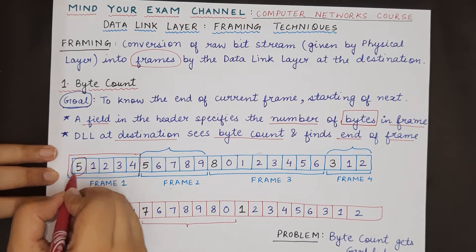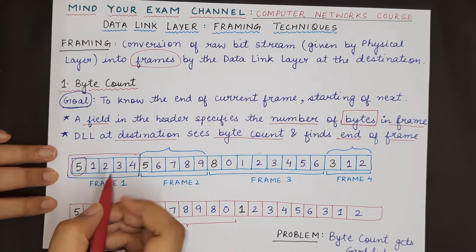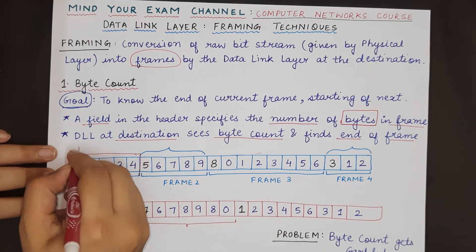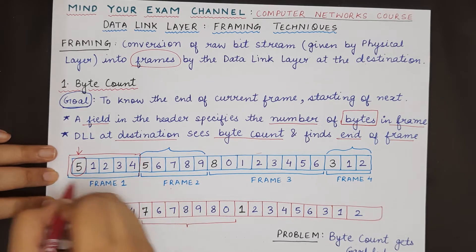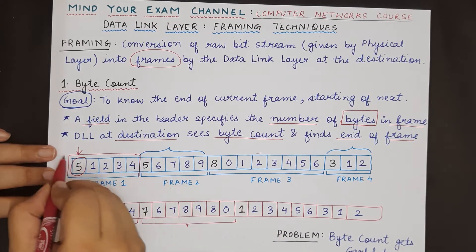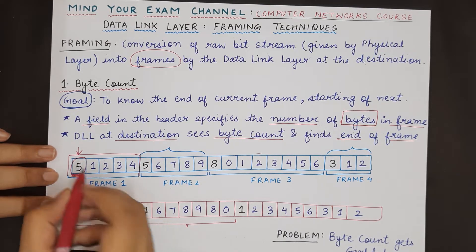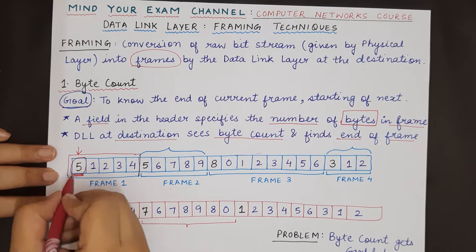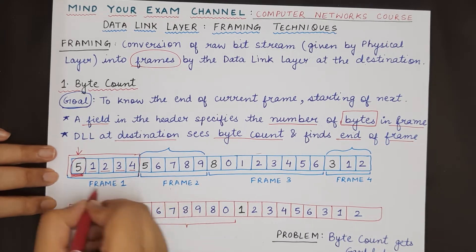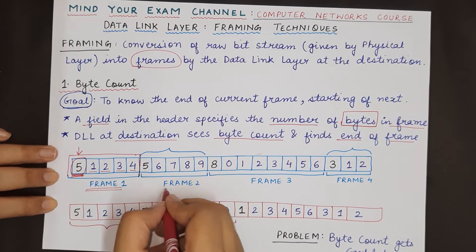The byte count field contains a value — 5 in this case — which means this entire frame consists of 5 bytes. When the destination data link layer sees this frame it checks the first field, which denotes the byte count. A value of 5 means that apart from this particular field, 4 more bytes are expected in this frame. When those 4 bytes end, the second frame will start.